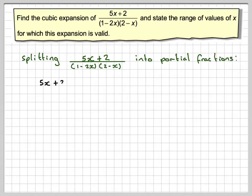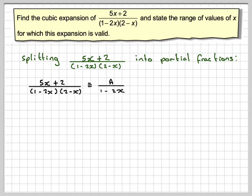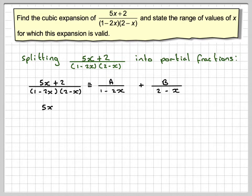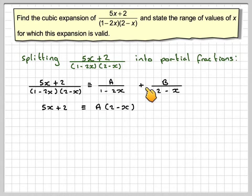So (5x + 2) / ((1 - 2x)(2 - x)) is equivalent to A/(1 - 2x) + B/(2 - x). That means 5x + 2 must be equivalent to A(2 - x) + B(1 - 2x).